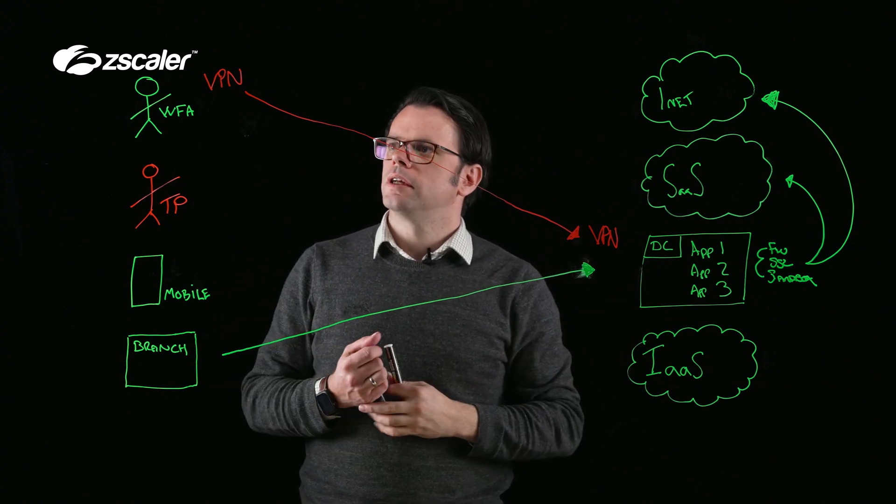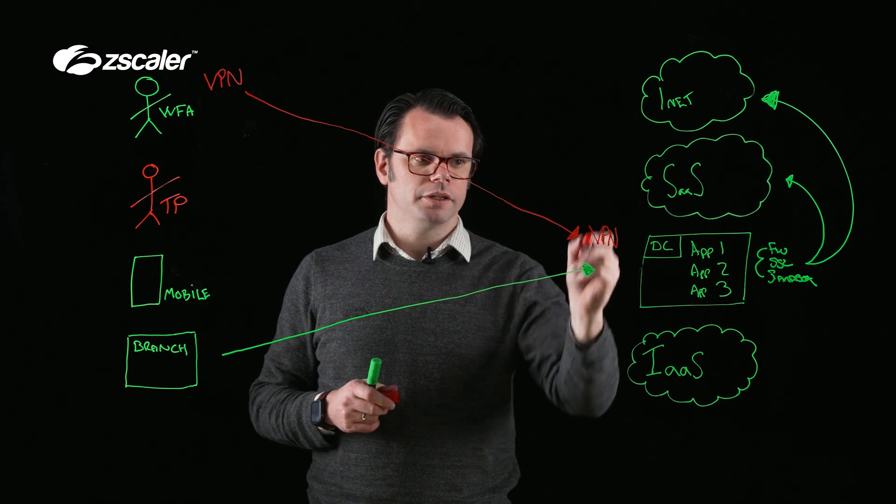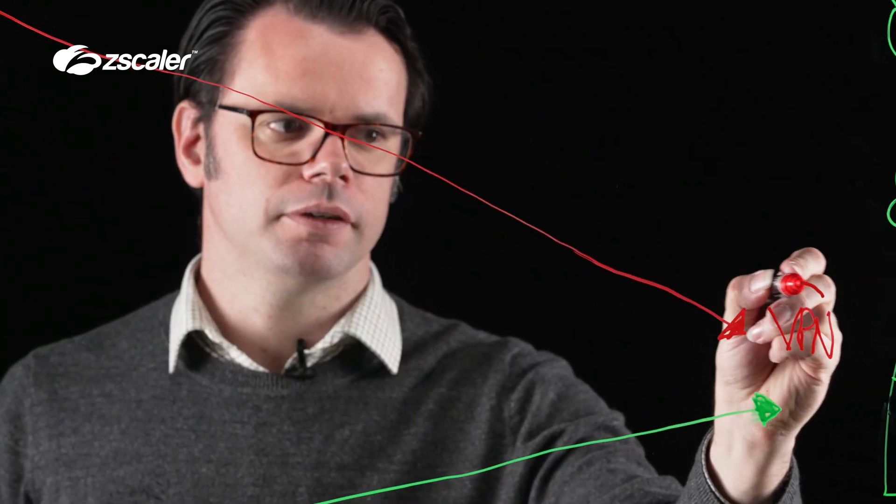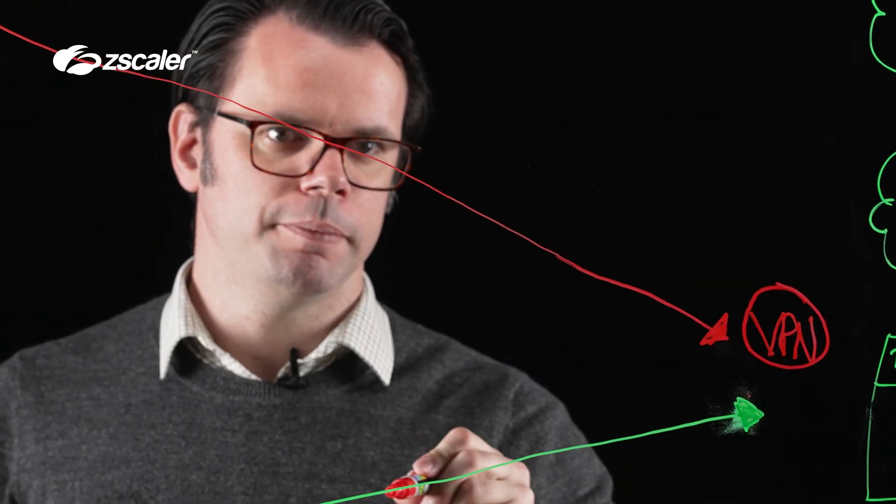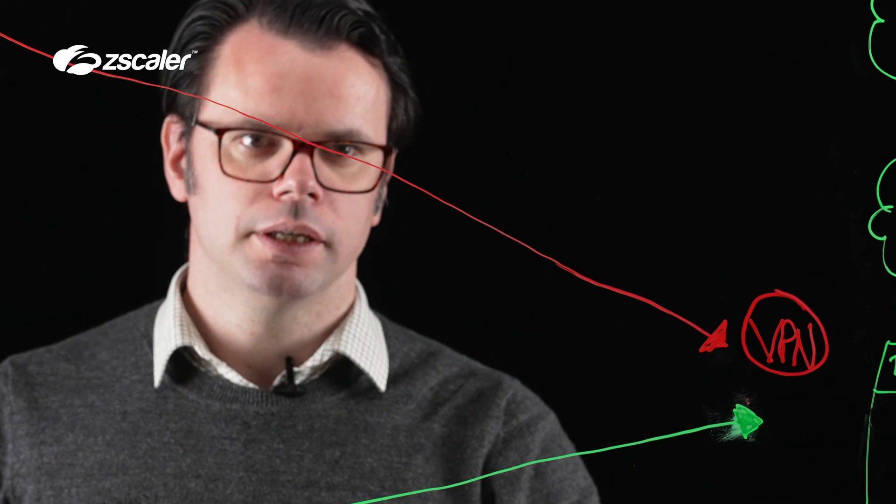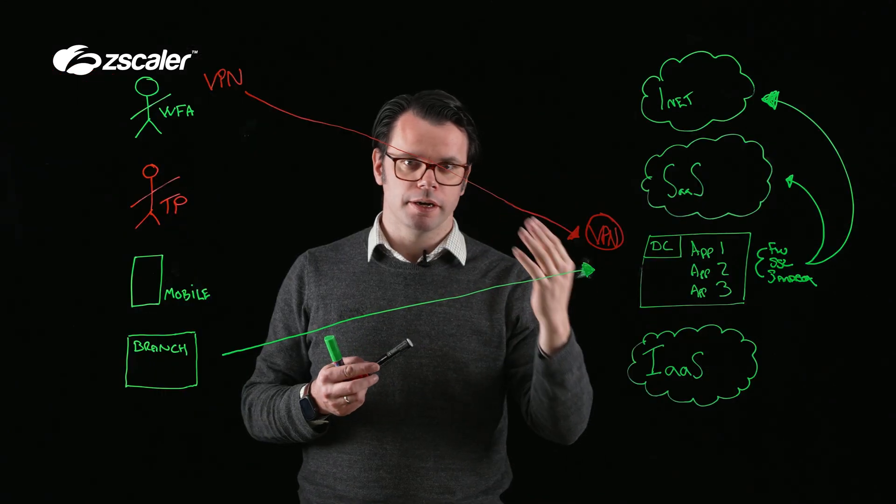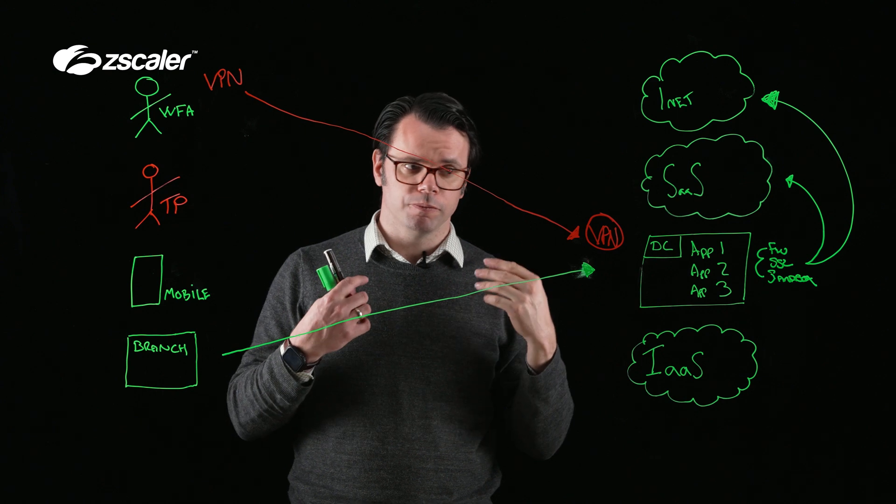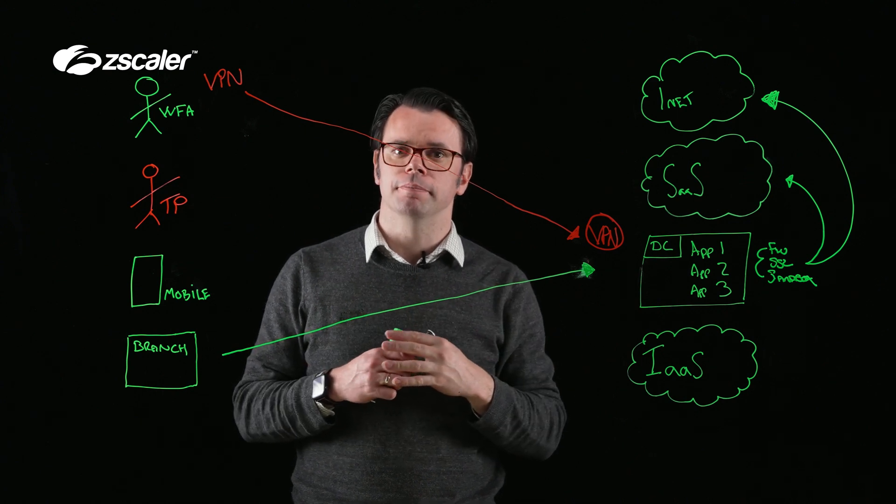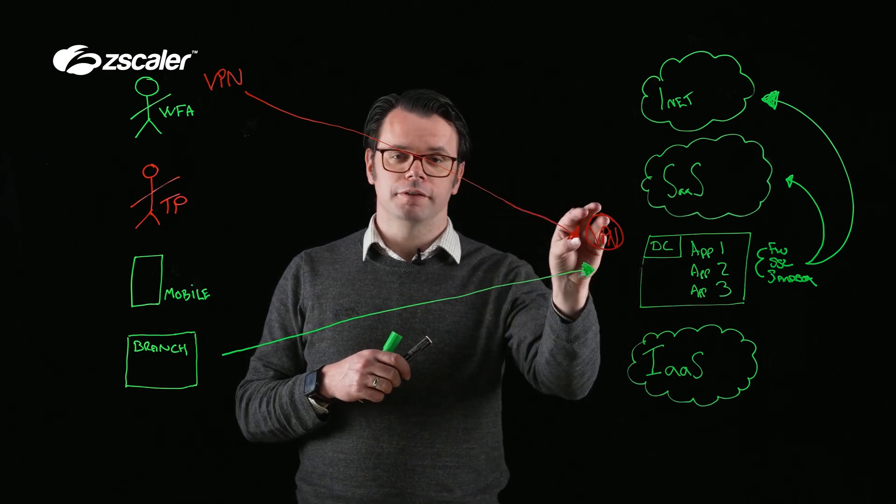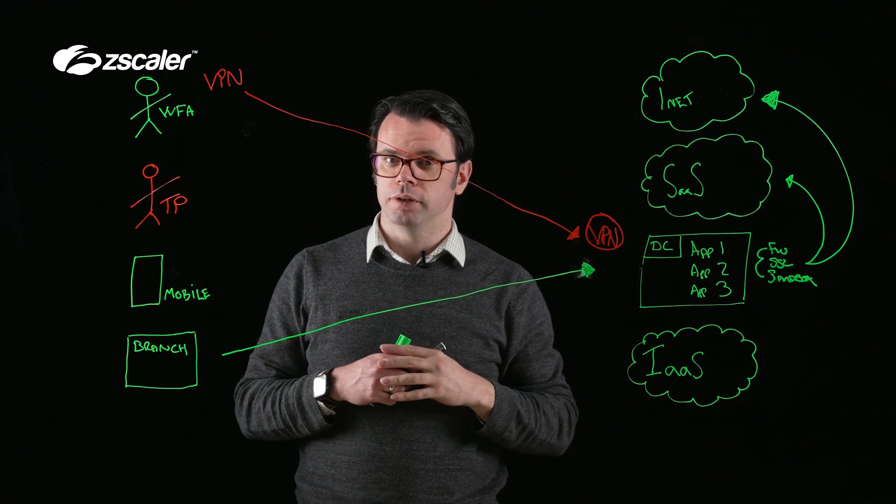Two problems with this - first of which is that we are listening for an inbound connection on our VPN concentrator. If you can reach it, you can attack it. And we've seen a number of vulnerabilities come to light from multiple VPN providers over the past couple of months that suggests that this is a risky way to do things.